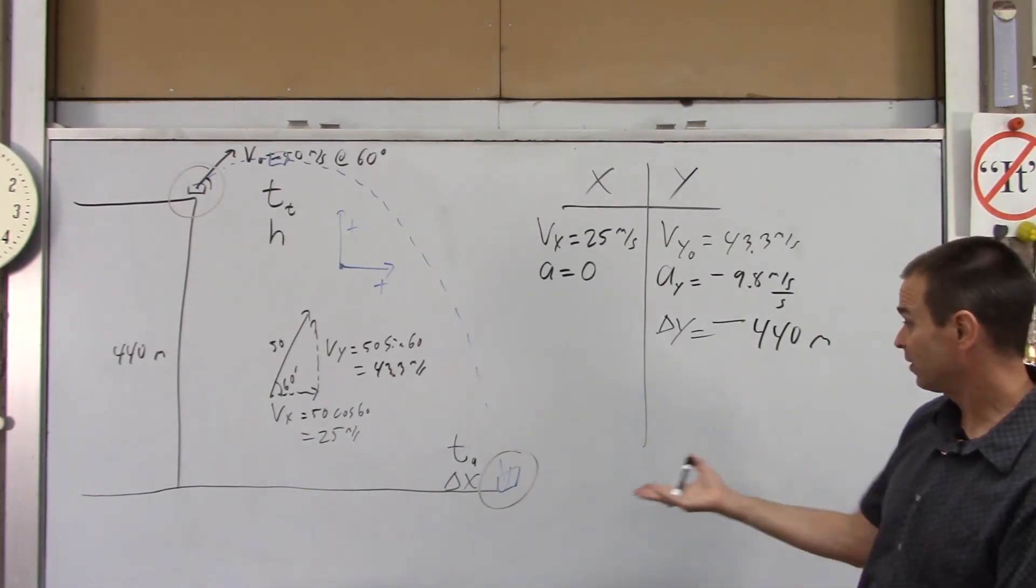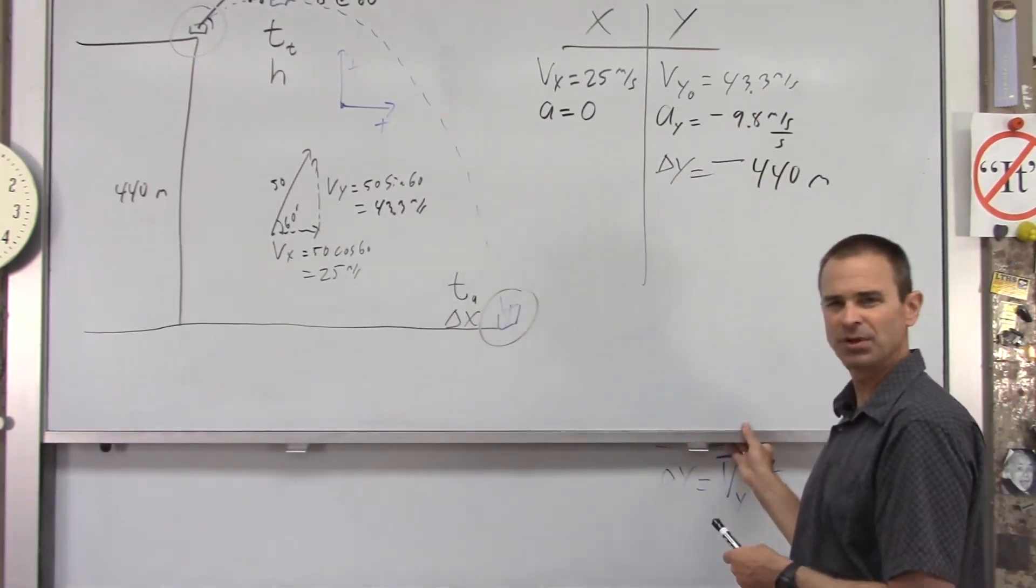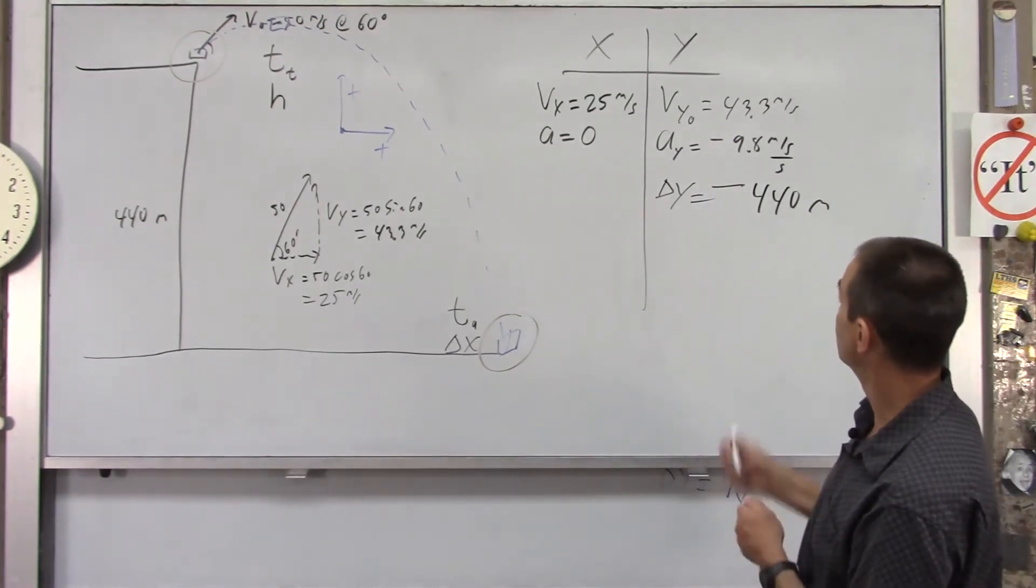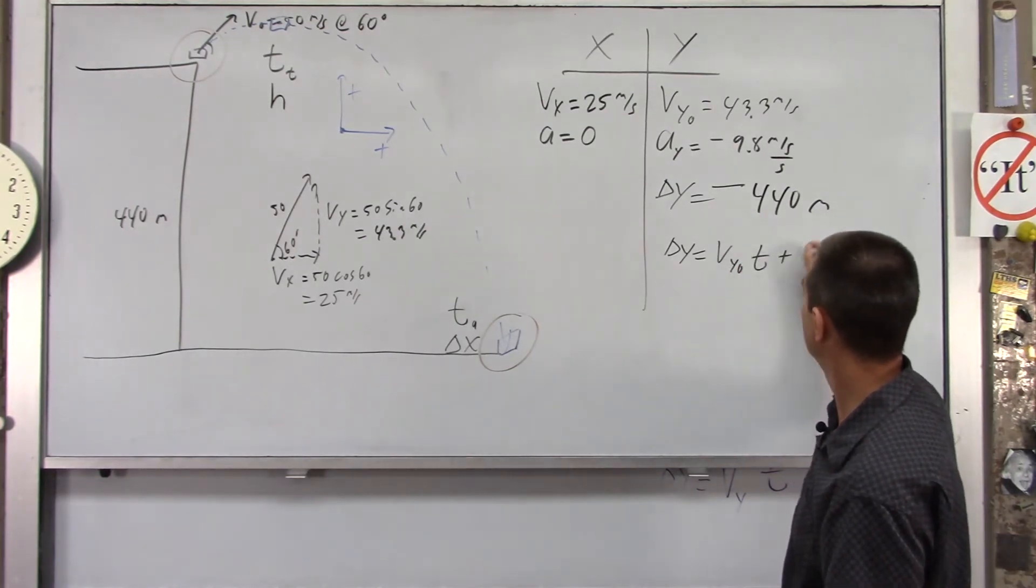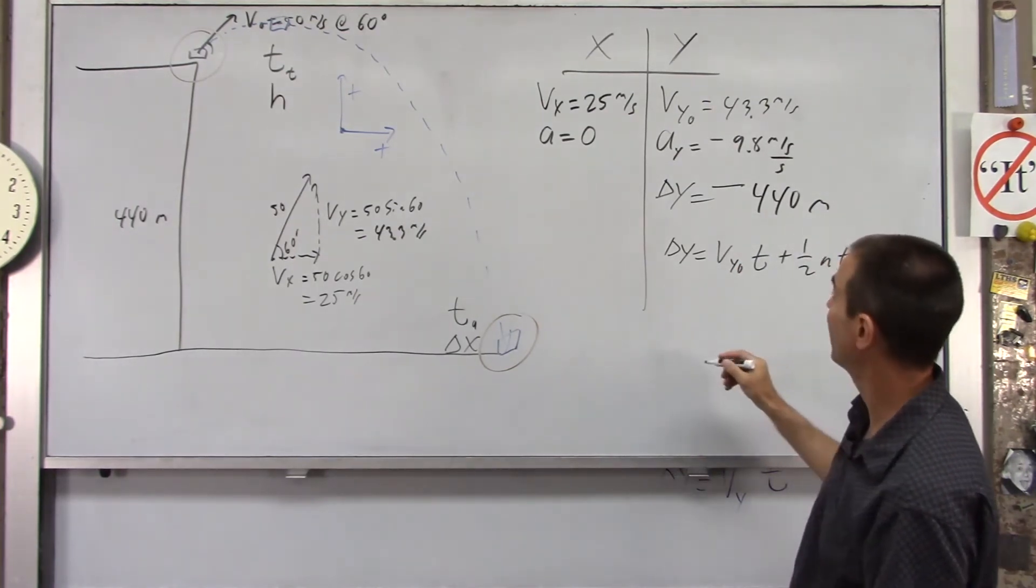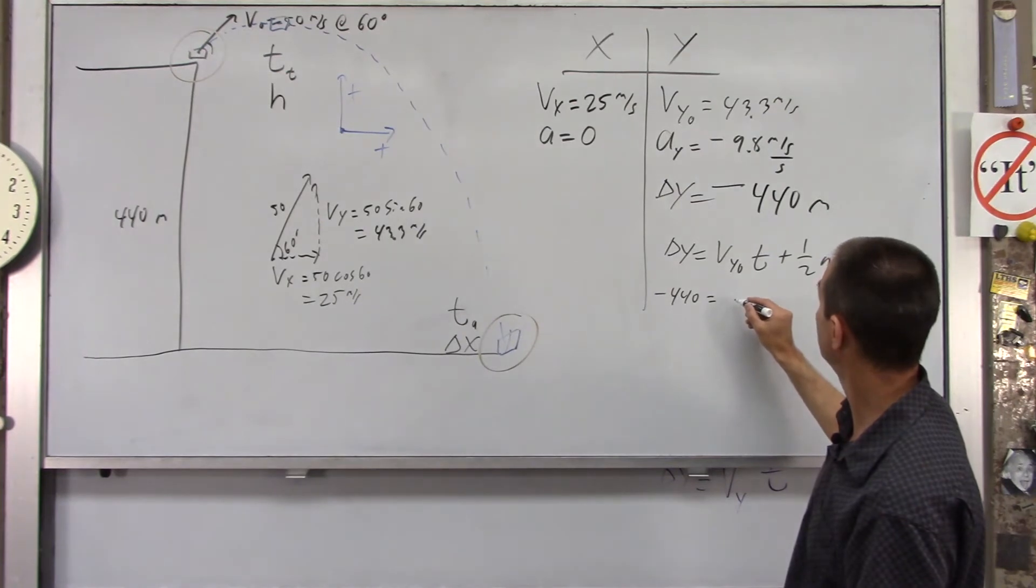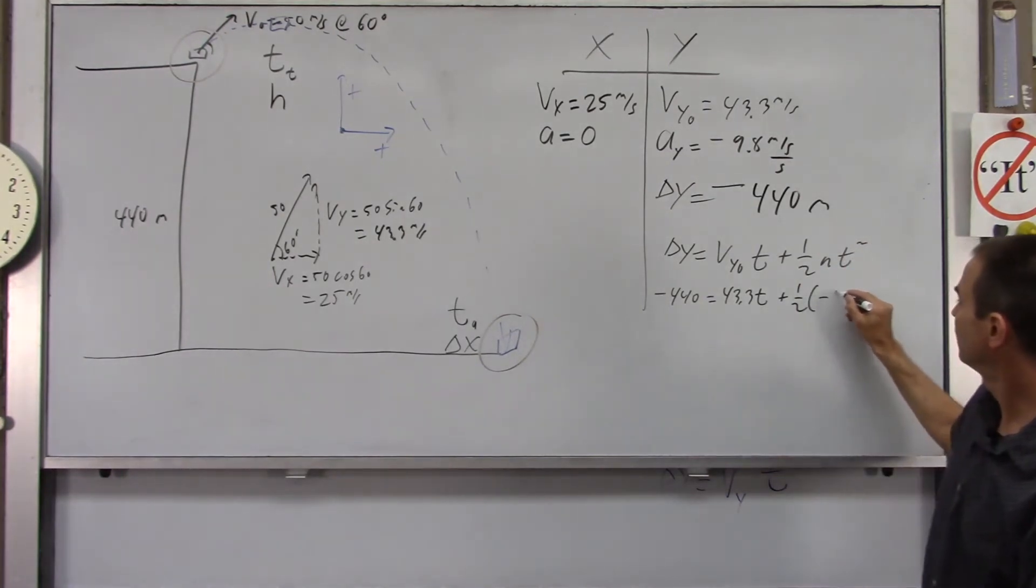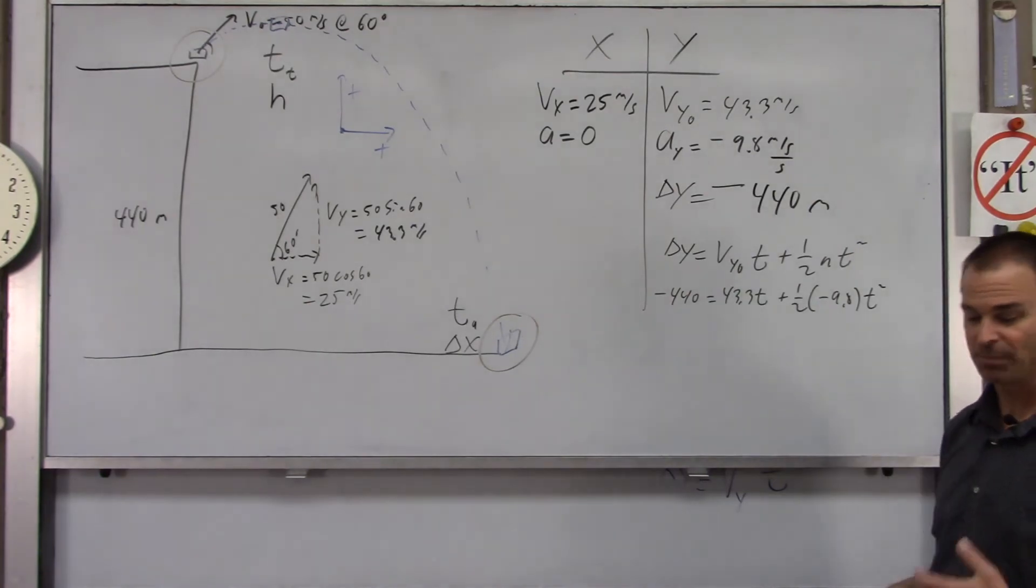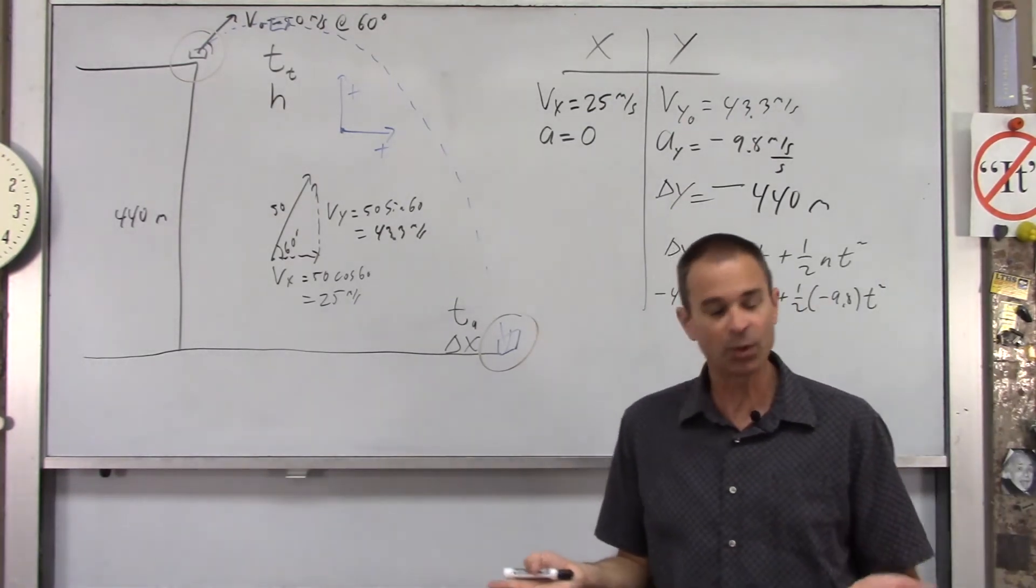All right. So, we now need to find time and delta x. In order to find time, there's a couple routes you could go here. So, you could use delta y equals vy0t plus 1 half at squared. We have everything but time in that. So, you would plug in negative 440 equals positive 43.3t plus 1 half times negative 9.8t squared. And that's fine. Now, the only issue with doing that as a mathematical issue is you've got a t and a t squared. You'd have to use the quadratic formula, which for most of us is okay.